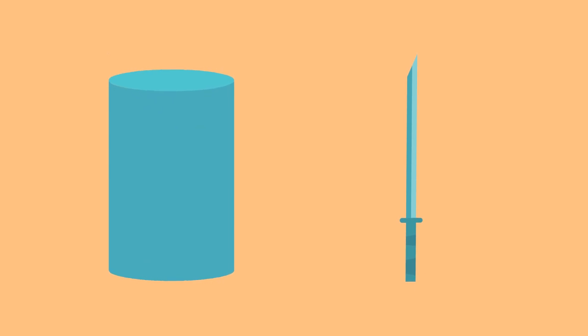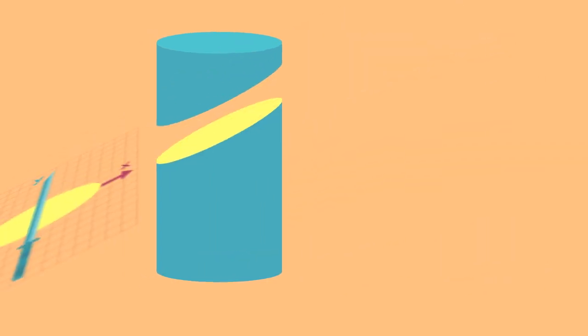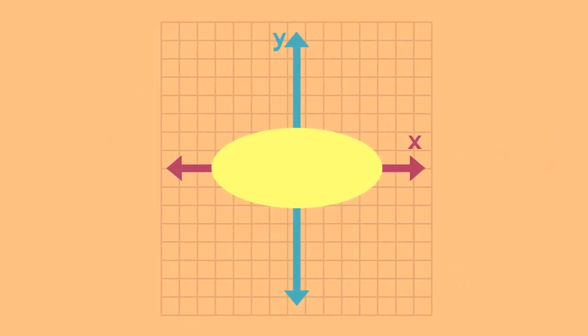Remember, you're slicing a solid three-dimensional figure with a geometric plane. You can slice in any direction, just keep in mind that shapes can look different when you look at them from different angles, so orient the cross section on the geometric plane.